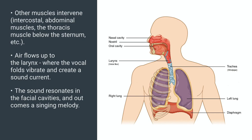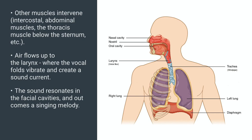This creates a vacuum in the lungs and air rushes in. Other muscles intervene — intercostal muscles, abdominal muscles, the thoracic muscle below the sternum, and so on. Air flows up to the larynx where the vocal folds vibrate and create a sound current. Then the sound goes up and resonates in the facial cavities and finally a melody comes out.